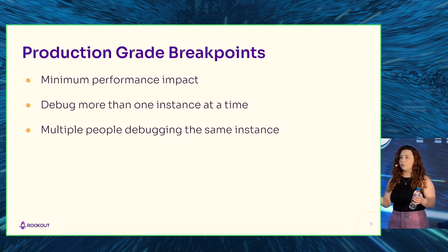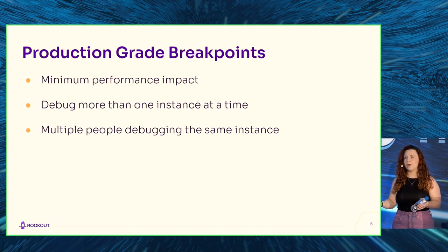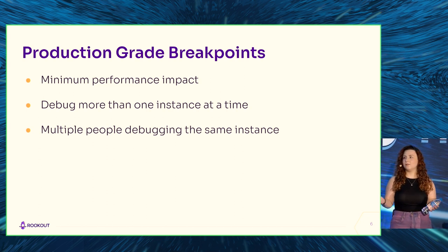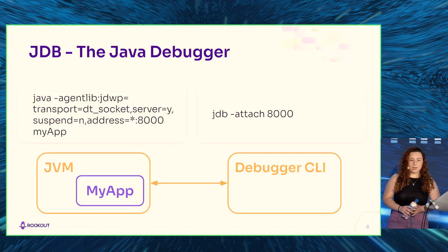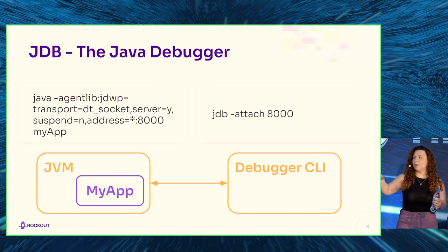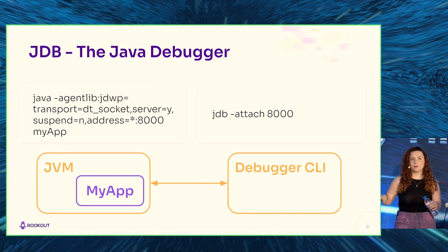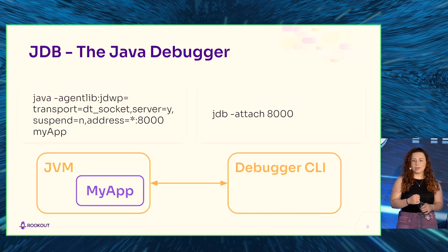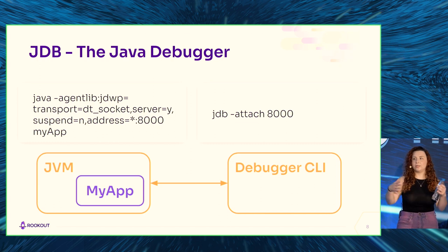We're not the first people to ever think to place a breakpoint on a Java application, so I started by looking at existing debuggers for Java. The most prominent one is JDB, which is a CLI debugger. You've probably used it, knowingly or unknowingly. JDB works pretty simply: you have one app - the debuggee - and then the debugger. You run the debuggee, attach to it an agentlib with the agentlib flag, and then your debugger attaches and controls everything in your app using the JVM.